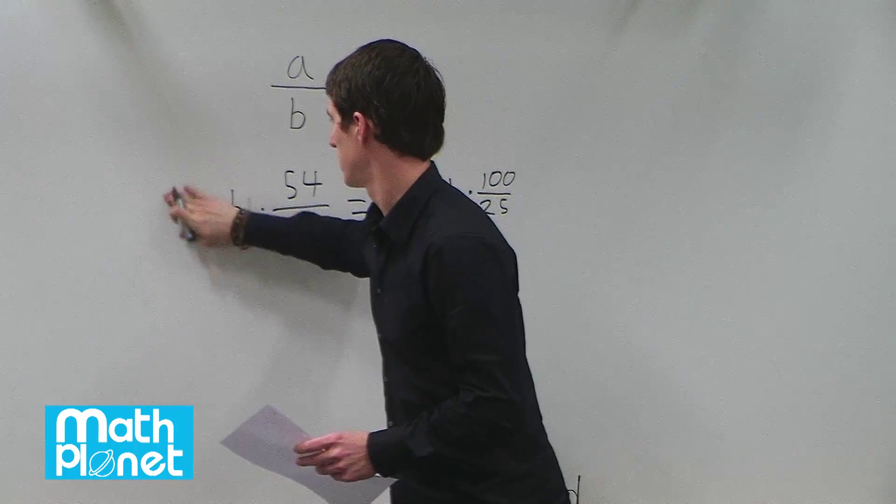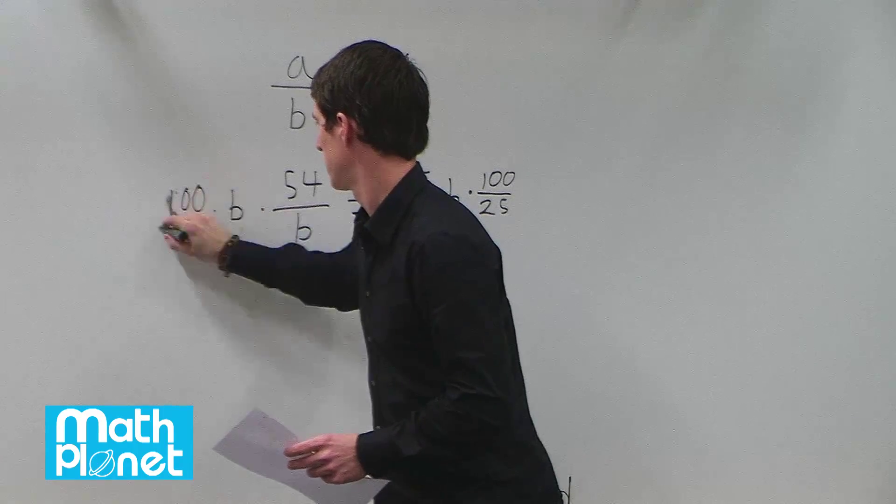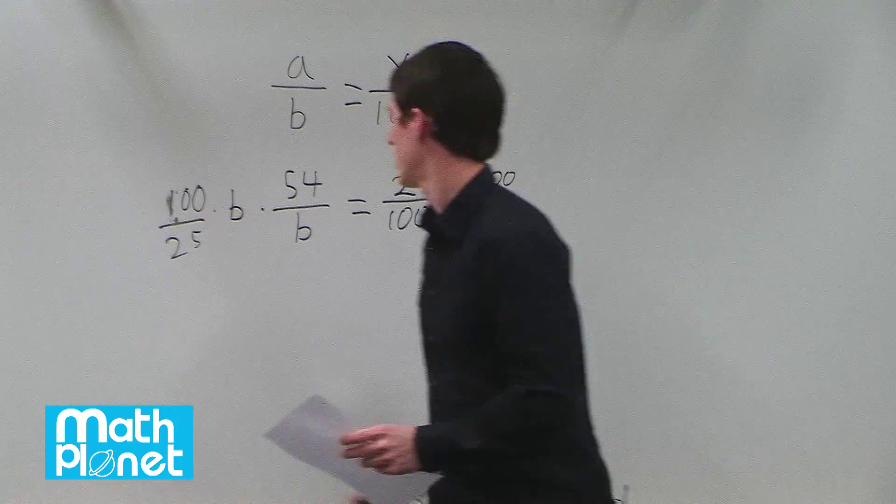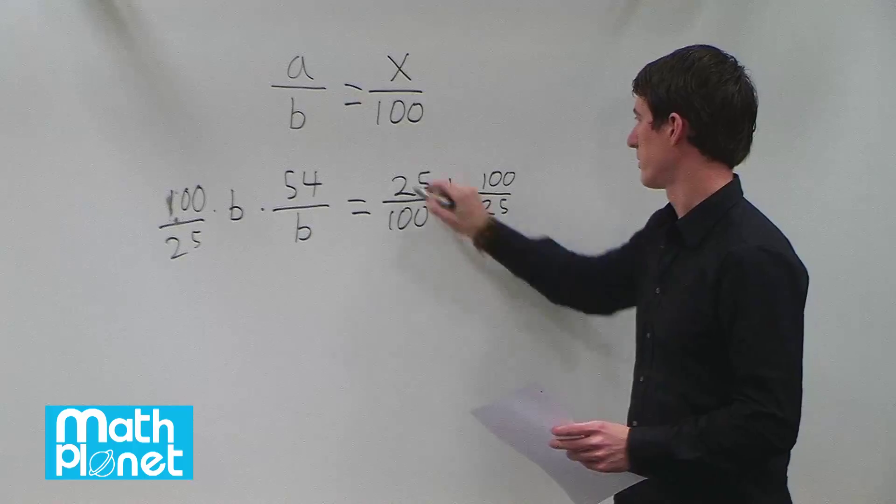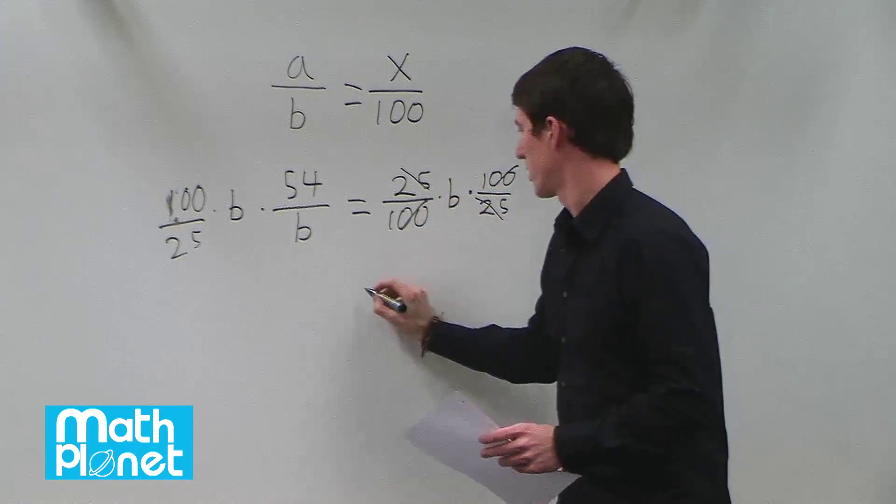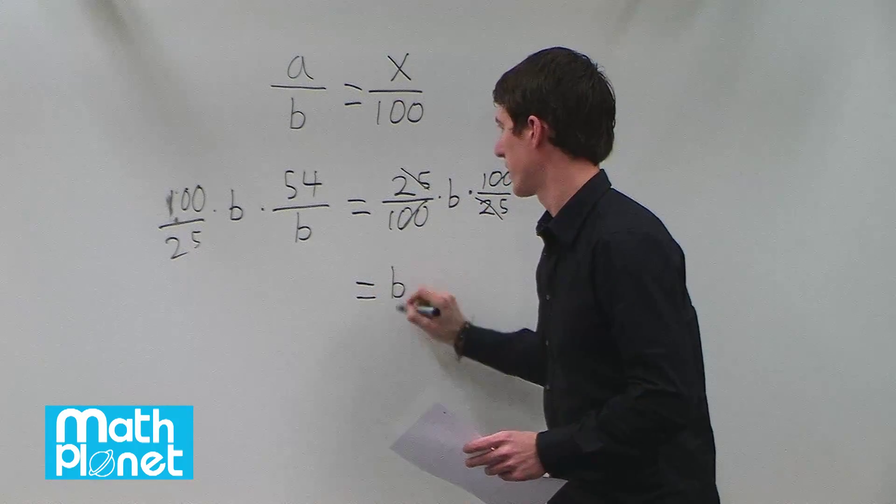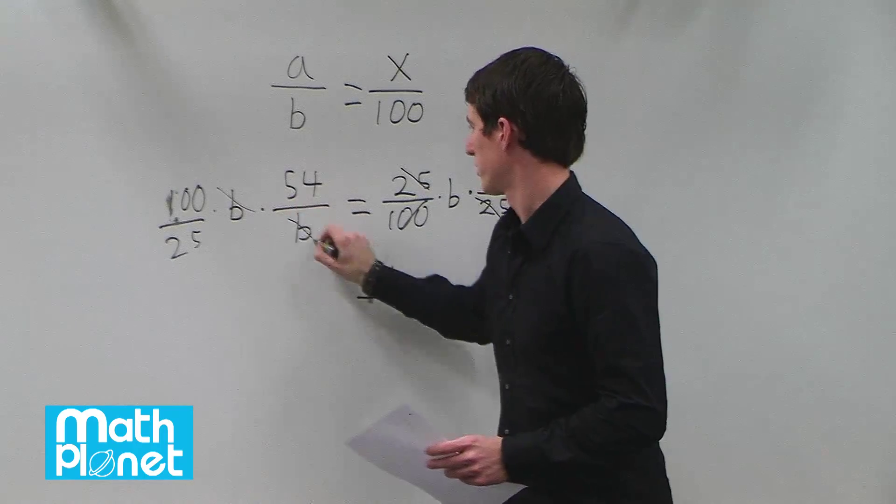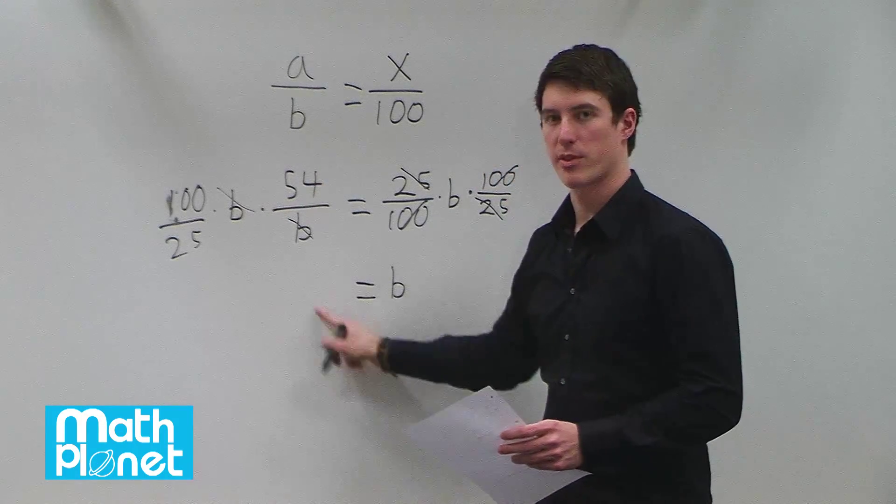100 over 25. So then these cancel, and these cancel, so we're given just B on this side, and these cancel, so we don't have anything except for numbers on the left hand side.